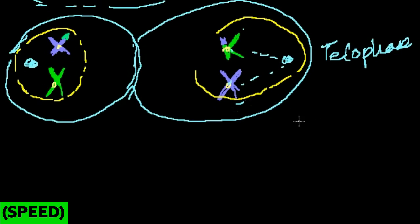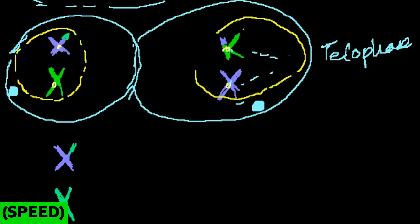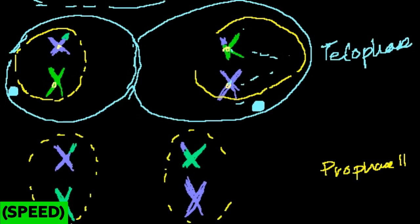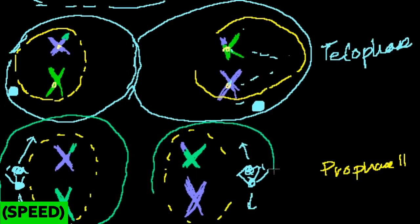Sometimes there's an in-between stage called interphase 2 where the cell rests. The centrosomes duplicate again at this point. So we now have two cells each with a replicated chromosome. When we enter prophase 2, the nuclear envelope that formed in telophase 1 — which was kind of temporary — starts to disintegrate again. The centrosomes, which have replicated, start pushing apart and generating spindle fibers in opposite directions. This is happening in two cells. Then we enter metaphase 2.